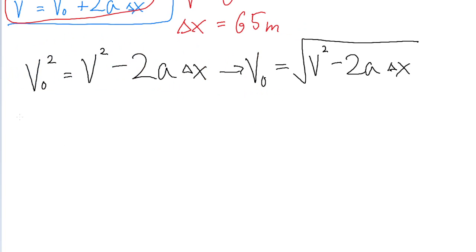Now we'll just plug our values into this equation. V0 equals the square root of V squared. Remember V is zero, so that's zero squared minus 2 multiplied by the acceleration, which is negative 4 meters per second squared,